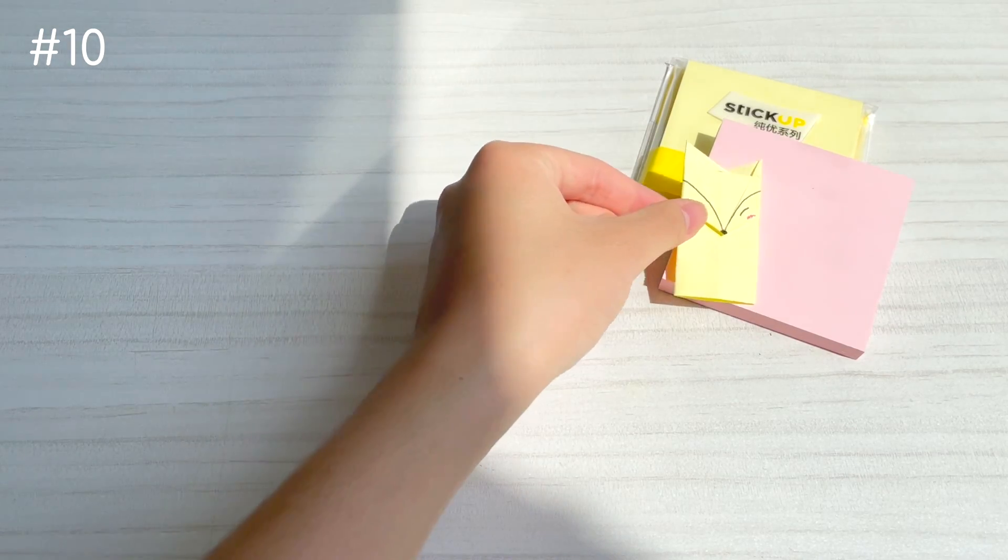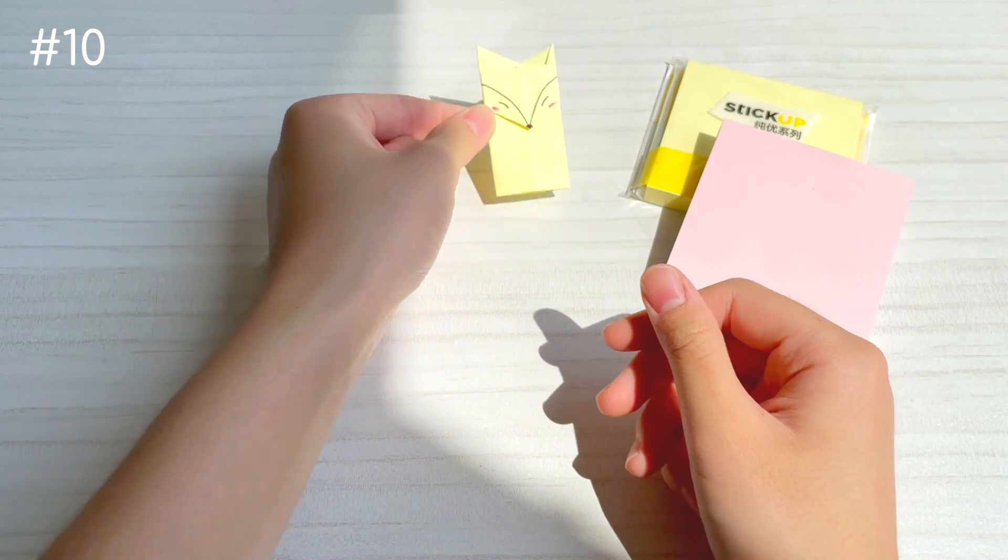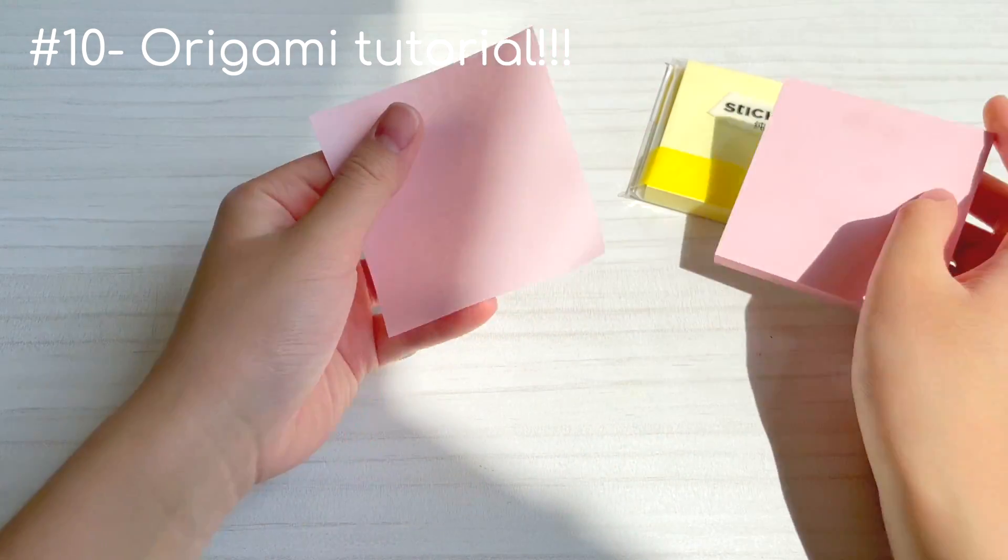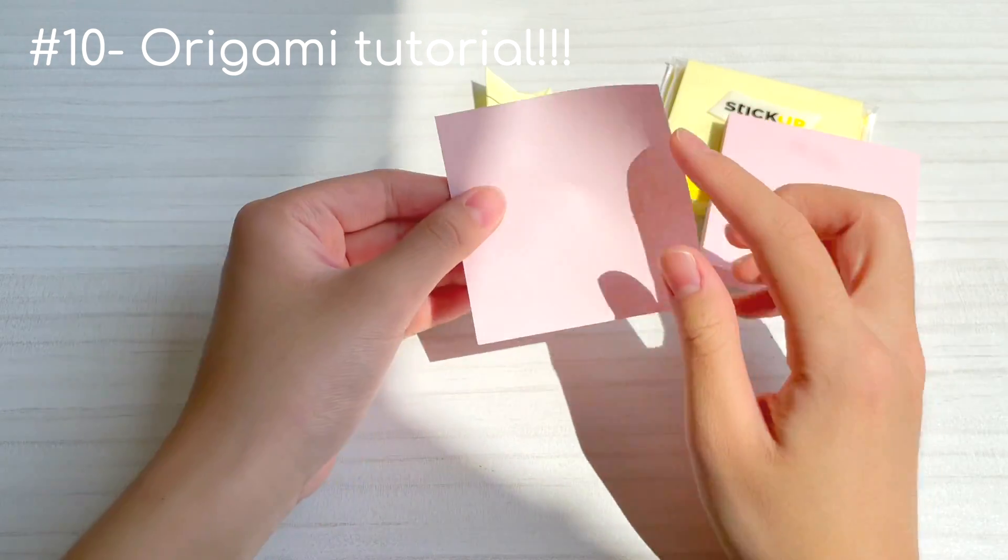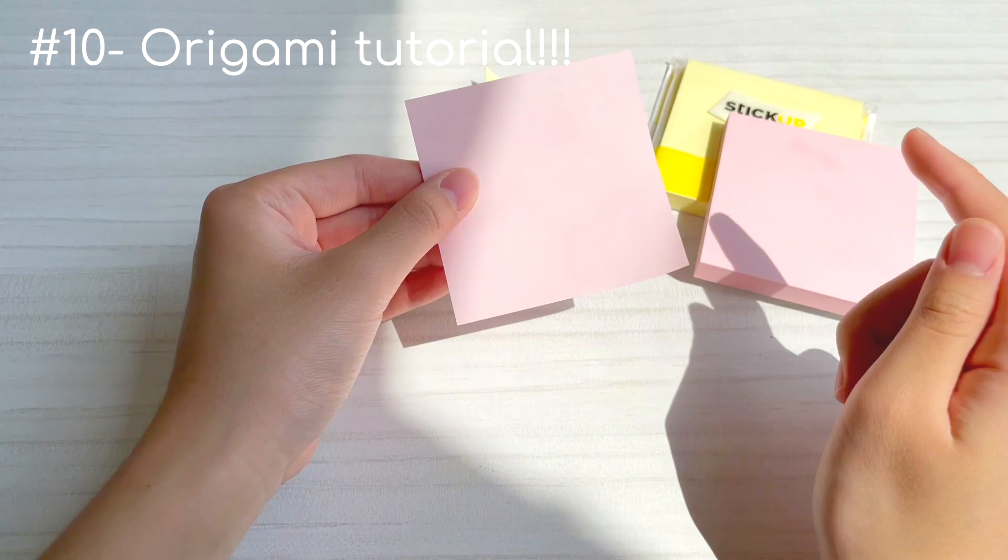The best thing about square paper is that you can make origami with them. Here's a tutorial on how to make a fox bookmark. If you want the bookmark to stick on your notebook, face the sticky side up, but I chose to have my non-sticky side facing up.